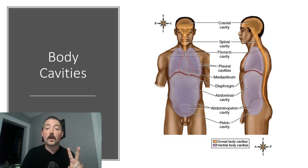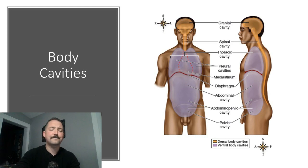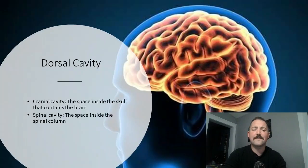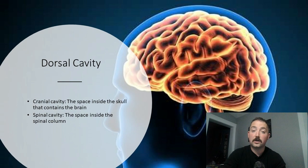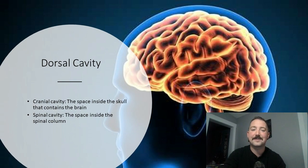There are two broad types of cavities: the dorsal cavity and the ventral cavity. The dorsal cavity is where you'll find what's called your central nervous system, which is your brain and your spinal cord. The brain is found in the skull, which is called the cranial cavity, and your spinal cord is found inside your spinal cavity, inside the vertebrae of your back.